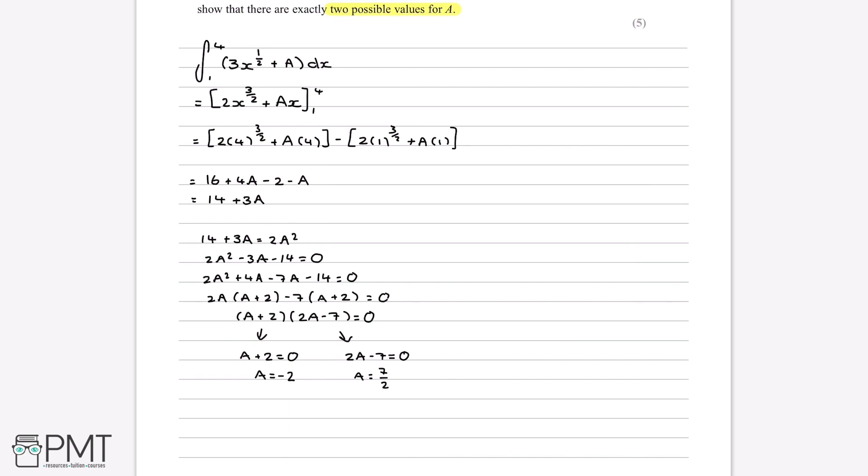Now, in this question, to get our marks, there are five marks available. So first of all, we get a mark for method and answer for simply writing that 3x to the power of a half plus a integrates to 2x to the power of 3 over 2 plus ax. So this is two marks, one for the method and one for actually getting the right numbers.